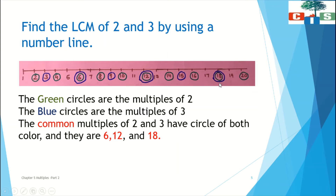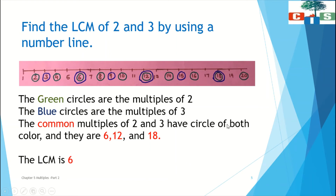Now the last step is to find the least common multiple. Which is the least number from 6, 12, and 18? Obviously 6 is the lowest number from these common multiples. So the LCM is 6.